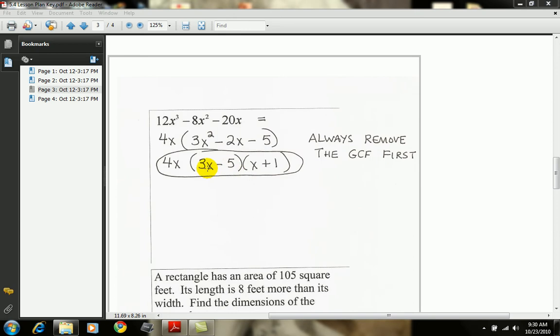And then the grin is the wide part, which is 3x times 1, which is 3x. Negative 5x combined with 3x gives me negative 2x. So that is the correct factorization.